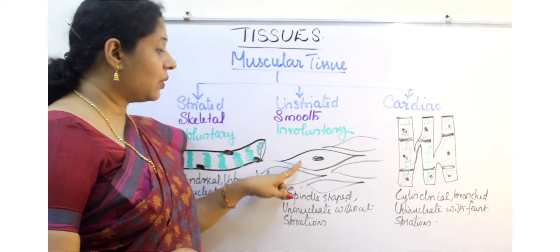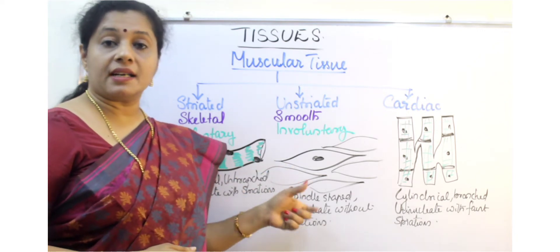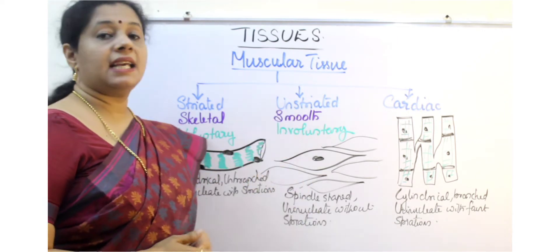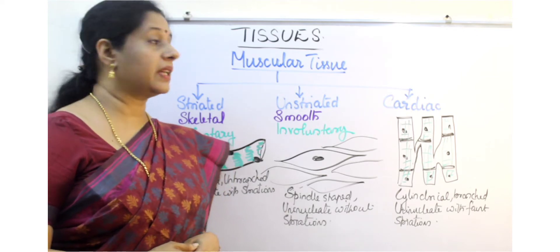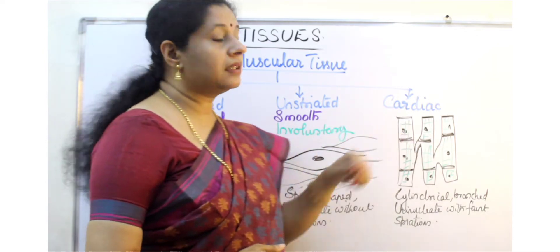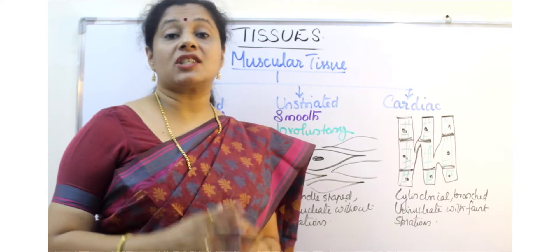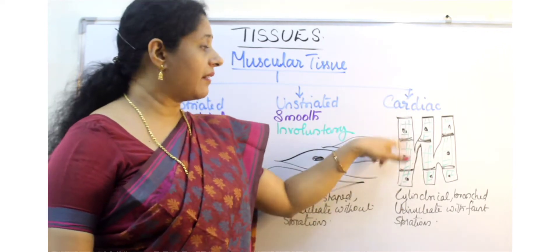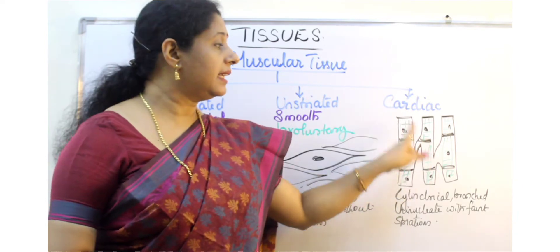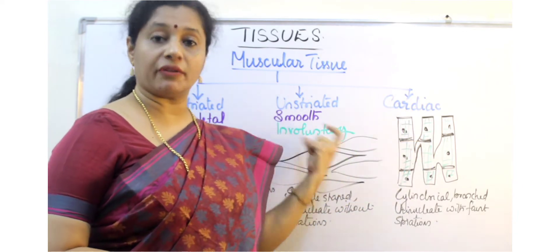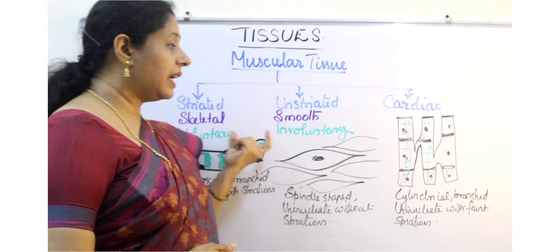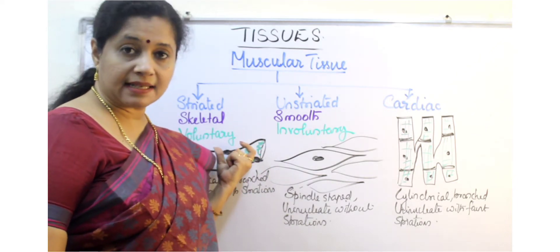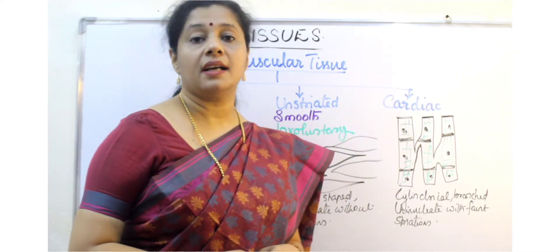Whereas when you look at the smooth muscles or unstriated muscles, you will not see any light and dark striations, so they are called unstriated. When it comes to the third type, cardiac, it is a very exclusive type of muscle found in the heart. They have faint striations. Their characteristics are intermediate of these two, so they don't have dark striations like striated muscles but some faint striations are there.